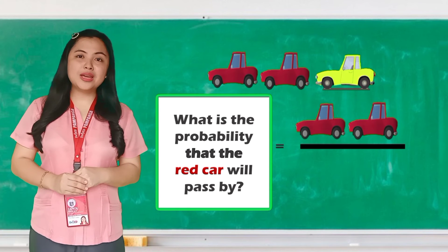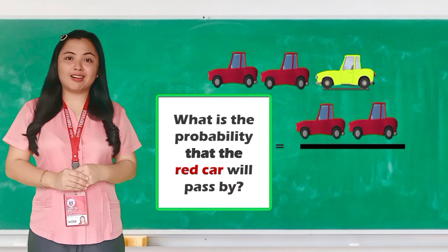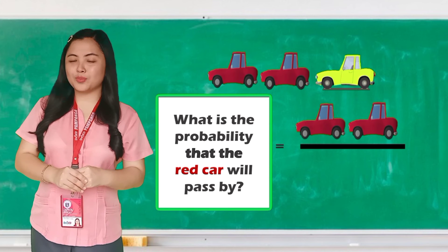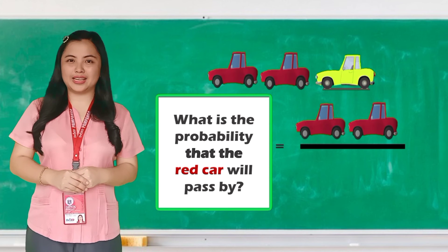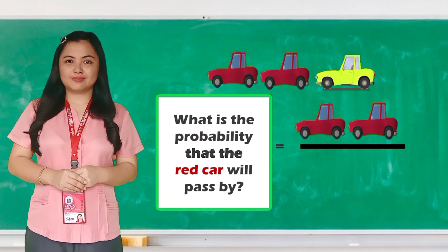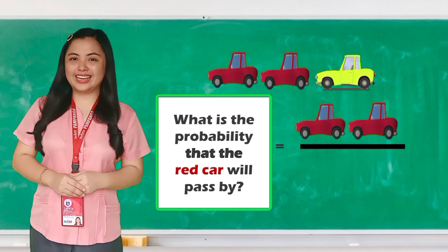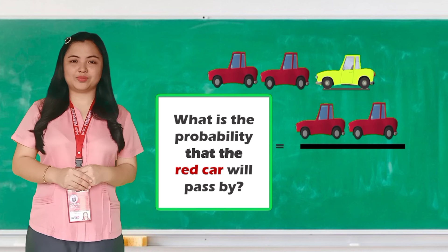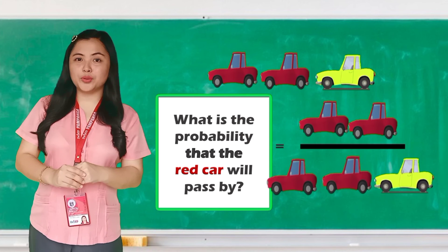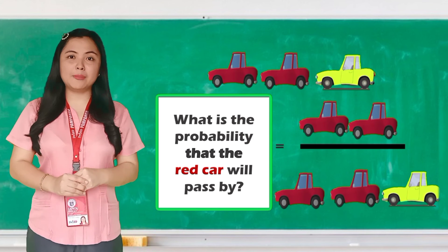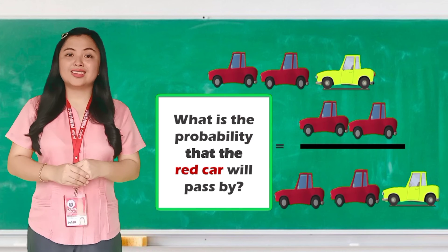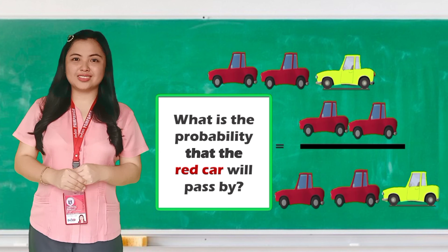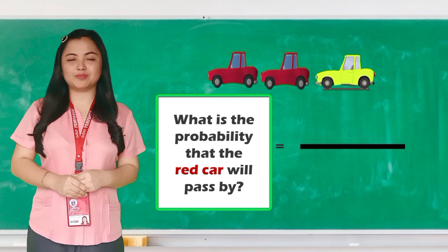How many total cars are there in all possible to pass by? There are three. Three will now be put on the denominator — the number of total outcomes.